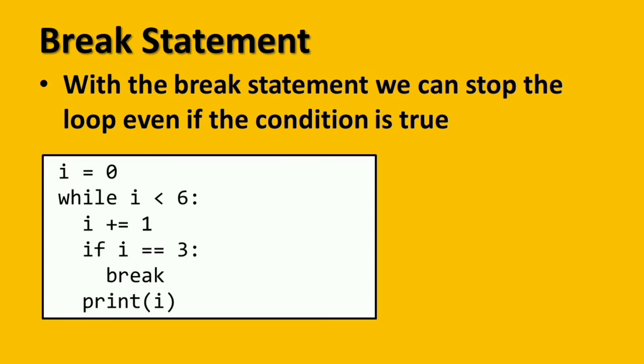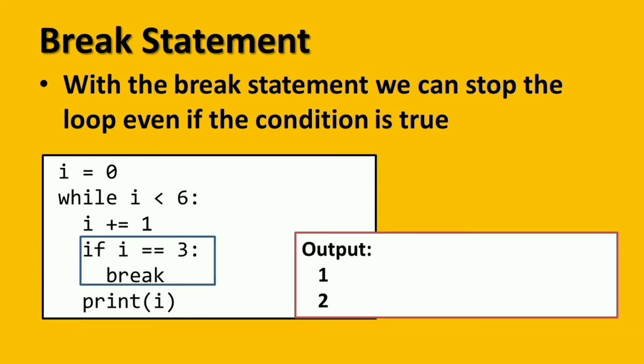So we have this example. Observe, we have if i equals to 3, ginamit natin ngayon yung keyword na break. So basically, mag-i-stop daw yung program kapag yung value ng i is equal to 3. So if we're going to run this program, ganyan na lang po yung output niya: 1 and 2, nag-stop na po siya sa 3. So to sum it up, yung gamit ng break is to end or stop.